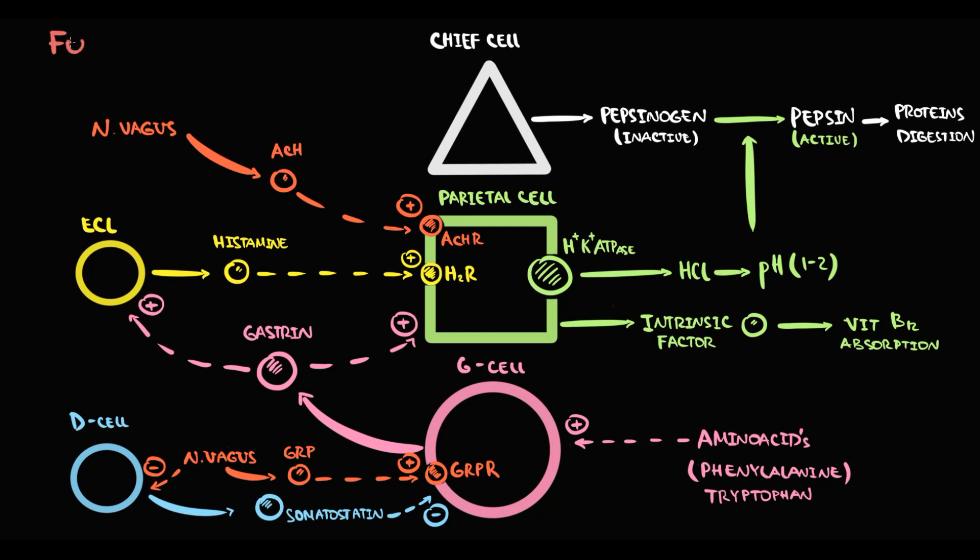For example, with intake of a meal, intake of food stimulates the parasympathetic nervous system, especially the vagus nerve. The vagus nerve stimulates parietal cells to produce hydrochloric acid. The increase in production of hydrochloric acid makes intragastric pH more acidic, so pH decreases.